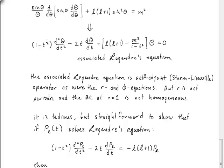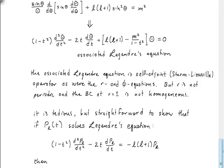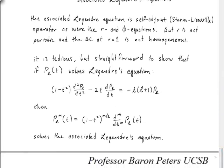And it is a self-adjoint equation. You can go through and show that. This can be written in Sturm-Liouville form, as was true also for the r and the phi equations. But remember that r was not periodic, and the boundary condition at r equals 1 was not homogeneous. So it's rather tedious but straightforward to show that if P_l of t solves this Legendre's equation. Remember, we solved Legendre's equation by a power series method earlier in the class. And we found that it solves this equation.